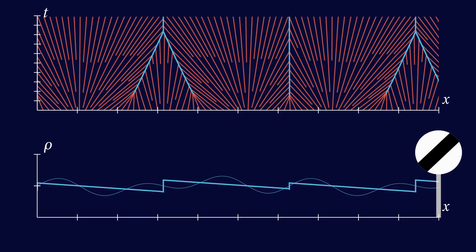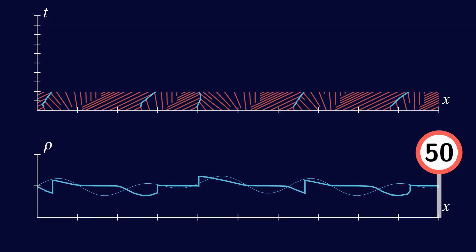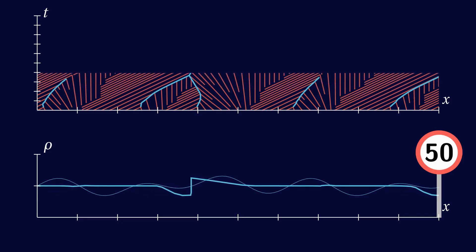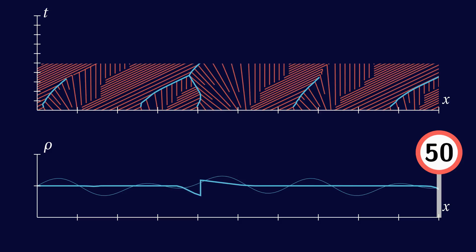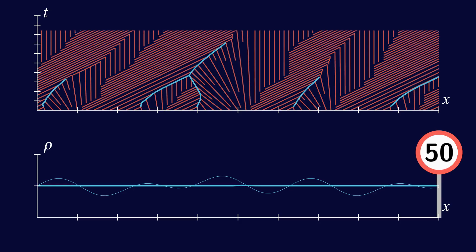So when there is a temporary speed limit on the motorway, when there is no obstruction and traffic is flowing nicely, it's likely that the traffic density is such that big shocks would be forming if a speed limit wasn't imposed. So it's not that the speed limit is unnecessary because there's no congestion, the speed limit has done its job and prevented queues from forming.